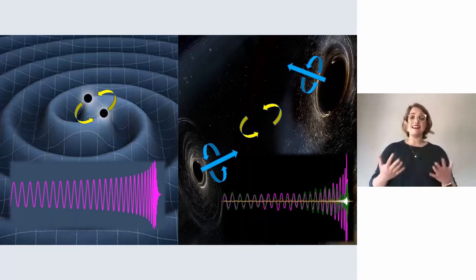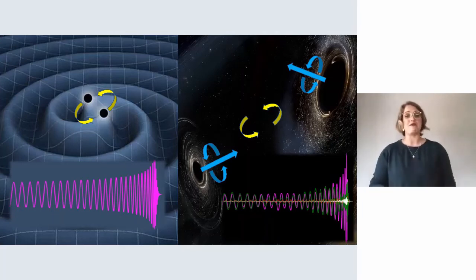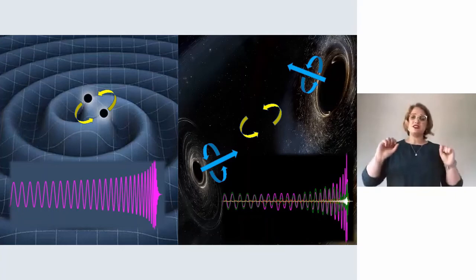Depending which model best matches the data, we can deduce how heavy the black holes are and how fast they're spinning, which gives us information about the stars they used to be. My PhD is on mergers where the individual black holes rotate in different directions to their inward spiral.